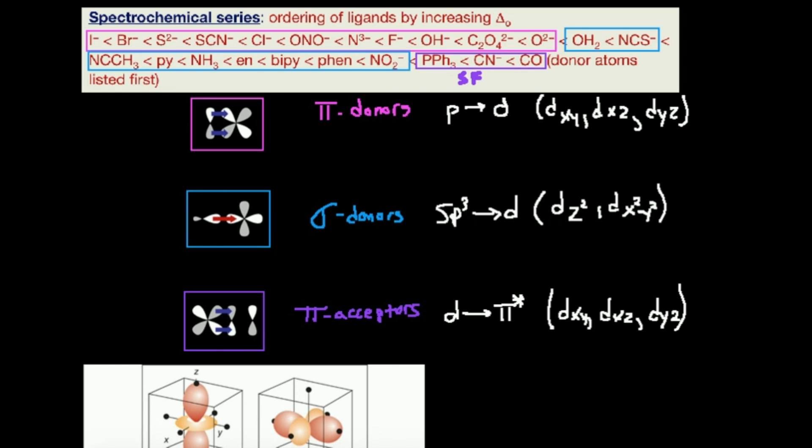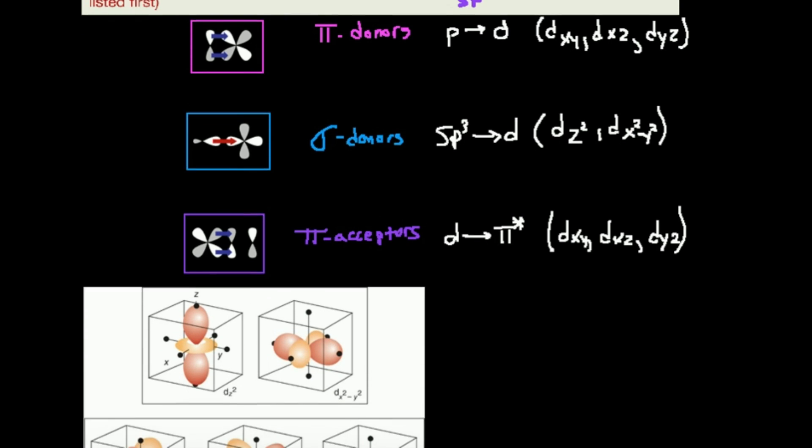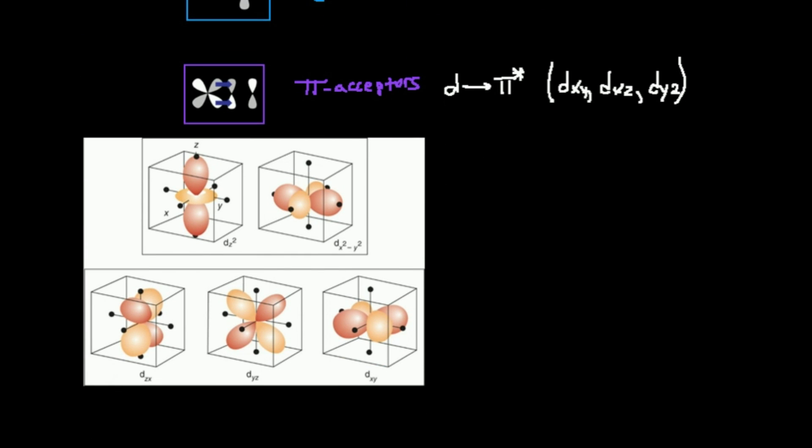The ones boxed in blue are sigma donors, and then the three strong field ligands are going to be pi acceptors. What we need to go over is exactly how this bonding works. This knowledge is applicable at this level of inorganic chemistry, but also in any advanced inorganic chemistry or molecular orbital bonding class talking about the theory.